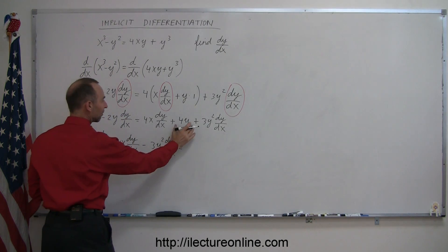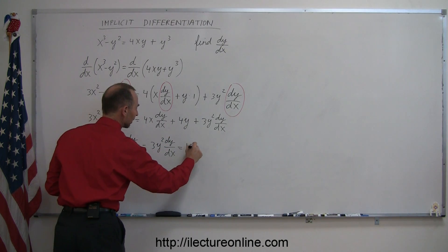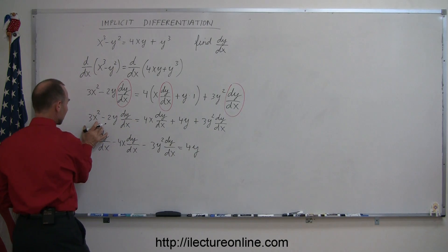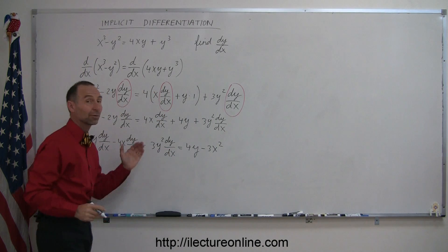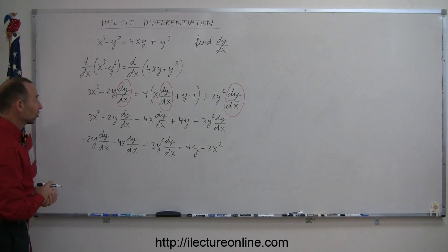Equals, now we already have the 4y on the right side so we can write that here. And then we have this term right here, the 3x², move that to the right side, that becomes minus 3x². Remember, whenever you cross the equal sign, you want to change the sign.